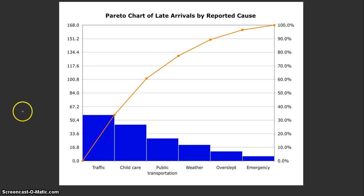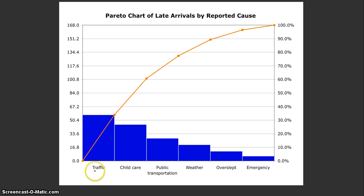Now, if I were to ask you for simply an Ogive — it's written 'ogive' but said 'ogive' — or a Cumulative Relative Frequency Diagram, all I would need is this line right here. And this line is going to show me the Cumulative Relative Frequency for each category and the category behind it.